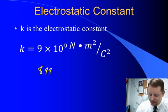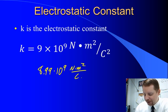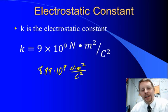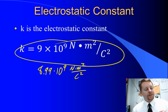You'll also oftentimes see this written as 8.99 times 10 to the 9th, Newton meters squared, per Coulomb squared. Which is perhaps slightly more accurate, but for our purposes and getting answers that are reasonably close, 9 times 10 to the 9th should suffice just fine.